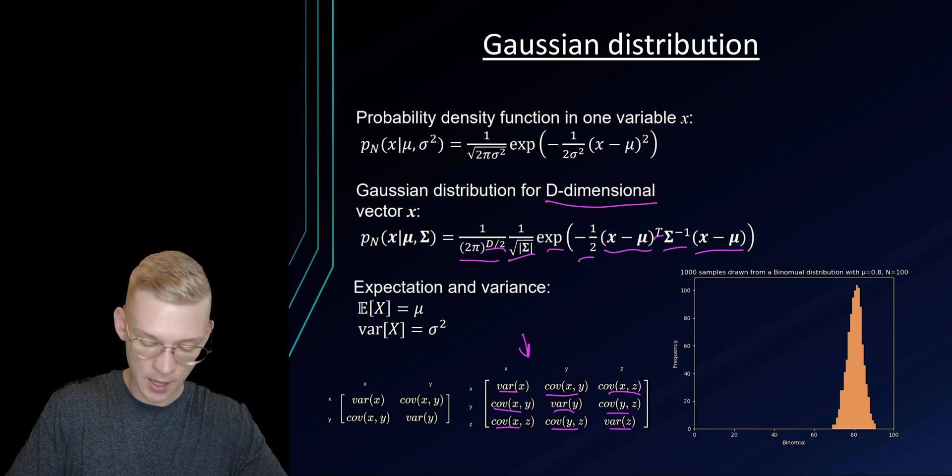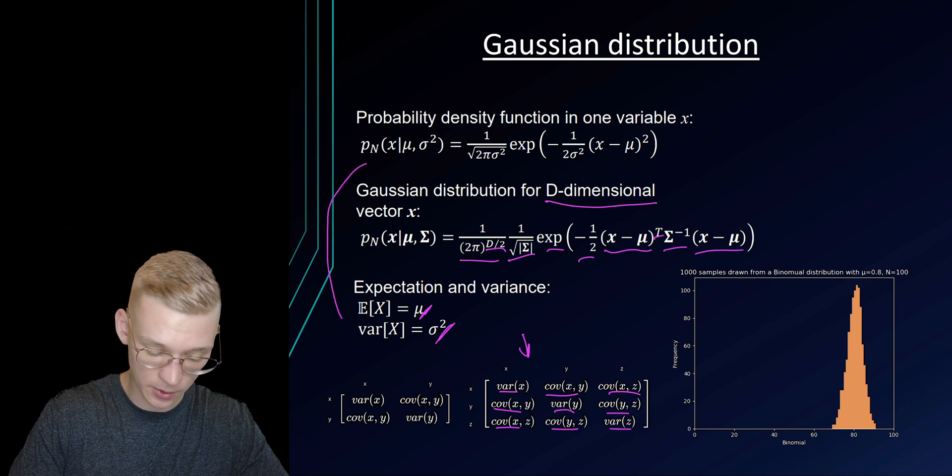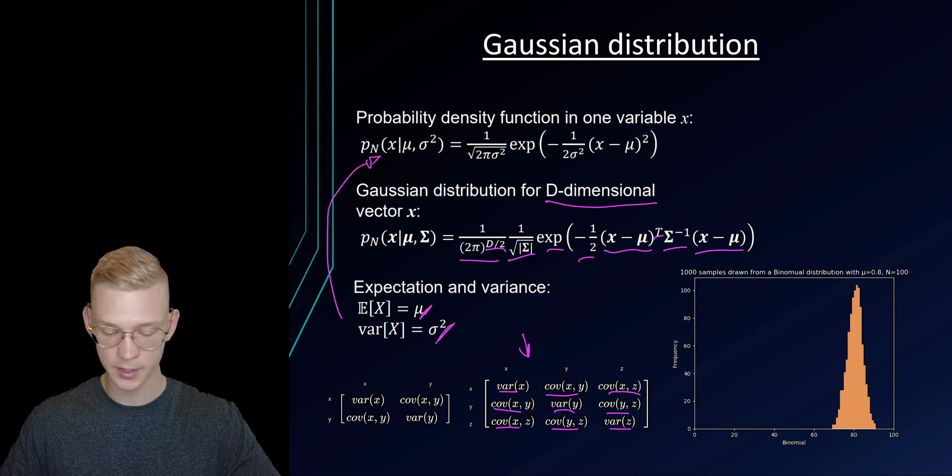The expected value is mu and the variance is sigma squared and we need those values to define our probability density function.